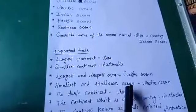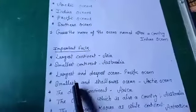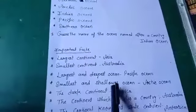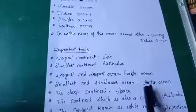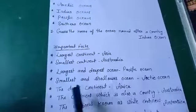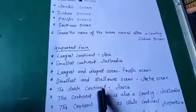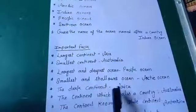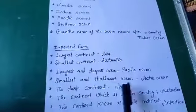Smallest and shallowest ocean — सबसे ज़्यादा छोटा और उथला जो सागर है वो है Arctic Ocean. Next — the dark continent is called Africa.